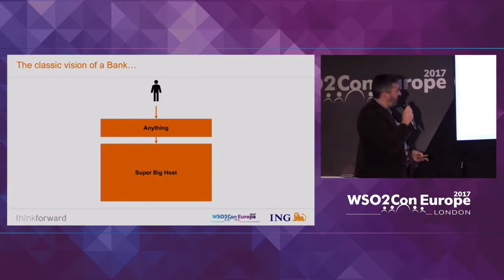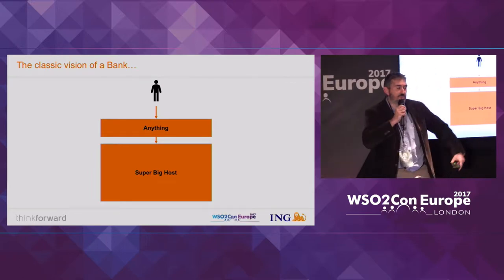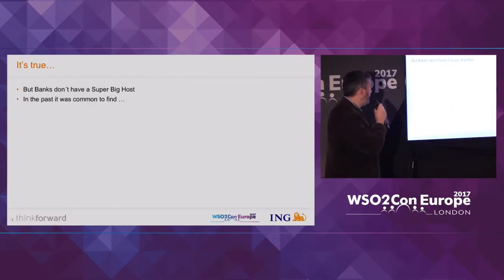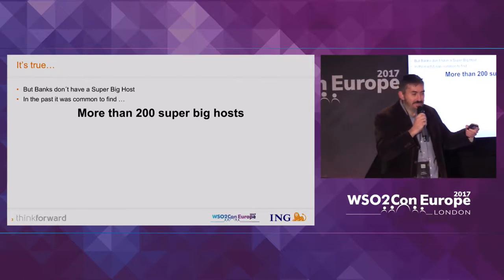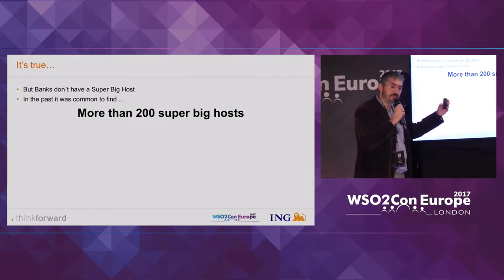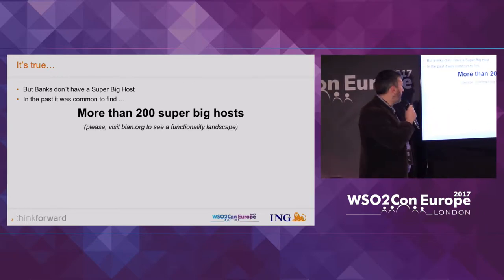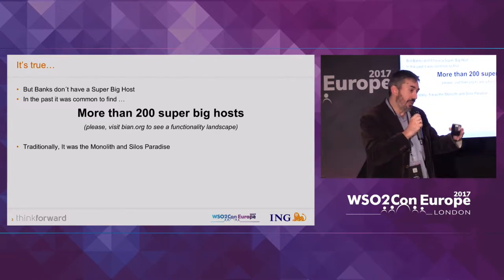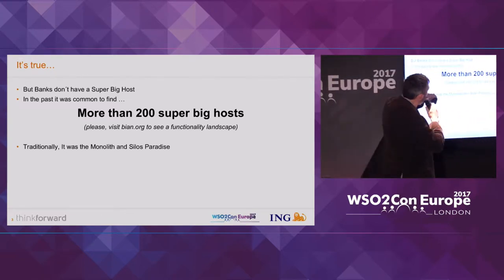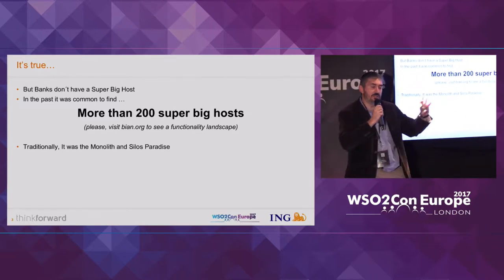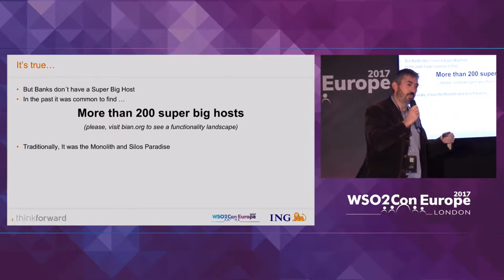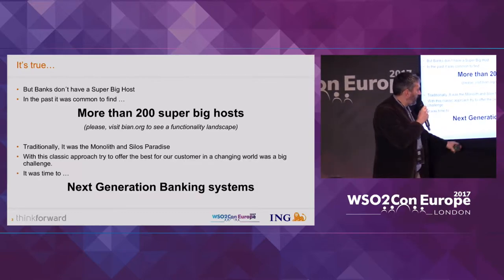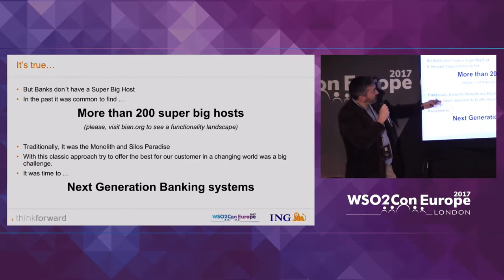This is the classic vision of a bank, of course. We at the bank have a super big host, legacy systems and so on. But the reality is that we don't have one big host. In practice, we have a lot of big systems that are interconnected, or were interconnected, as silos. If you want to analyze the functionality and why banks and other organizations are so complex, just visit an organization to see the functionality landscape. The complexity is very high and the processes we have to support are very high as well. That's the reason we have a lot of big hosts.